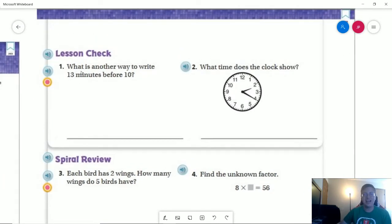So number one on the back, what is another way to write 13 minutes before 10? This would be writing it as the standard time. So we would be in the nine o'clock hour. And then 60 minus 13 would give us 47. So 9:47.